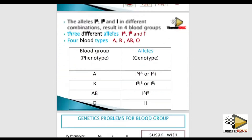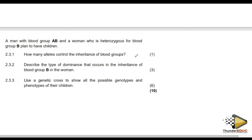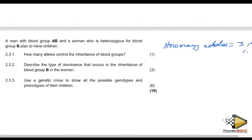I always tell students that before you go to the paper you must answer these questions, because at least one question will come on blood groups — specifically how many alleles there are. We said there are three: allele for A, allele for B, and allele for O.